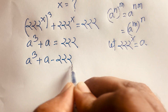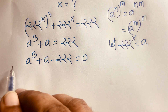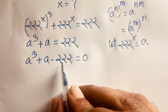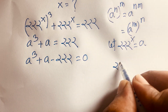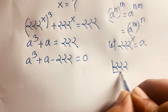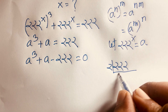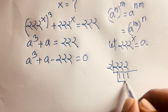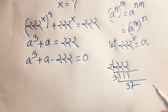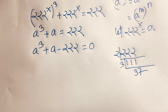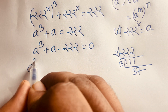We rearrange to get a cubed plus a minus 222 equals 0. Now we factor 222: dividing by 2 gives 111, and dividing by 3 gives 37. So 222 equals 2 times 3 times 37, which equals 6 times 37.